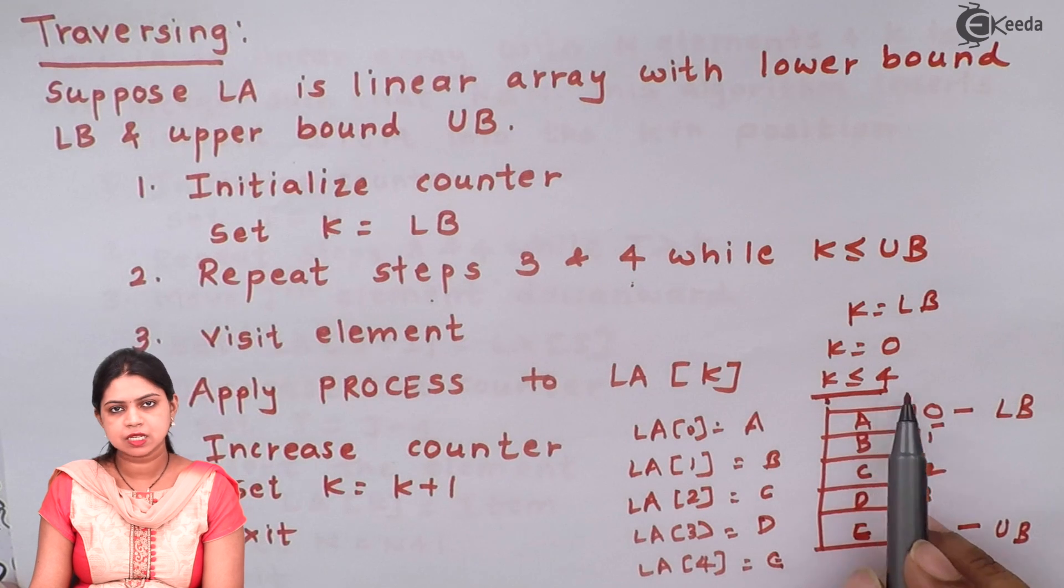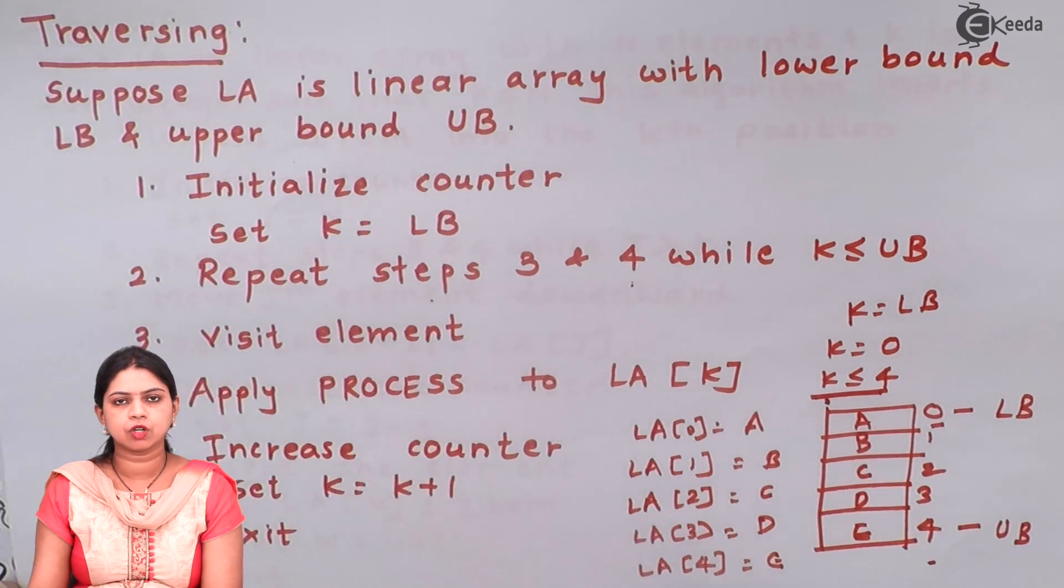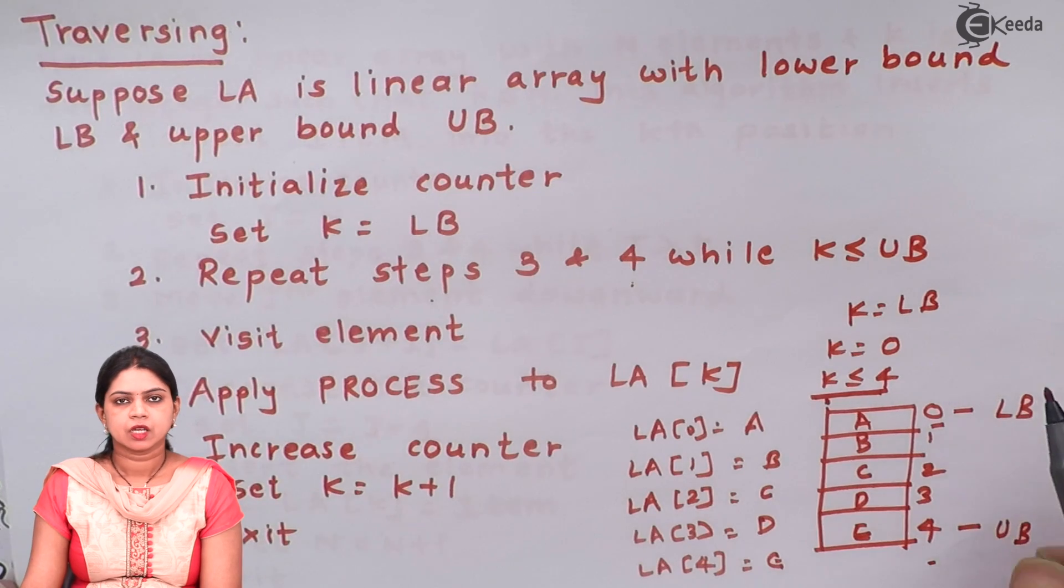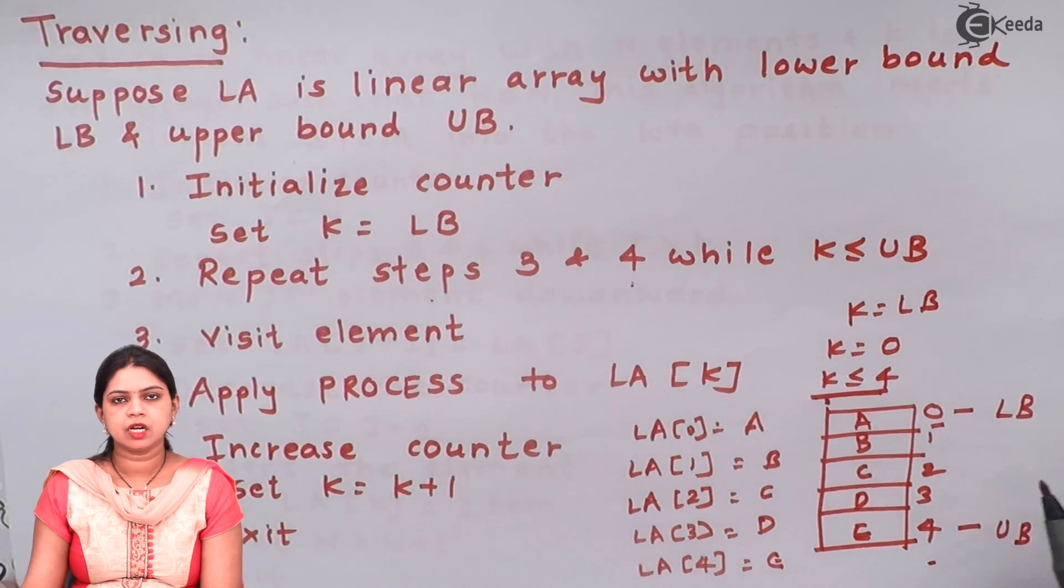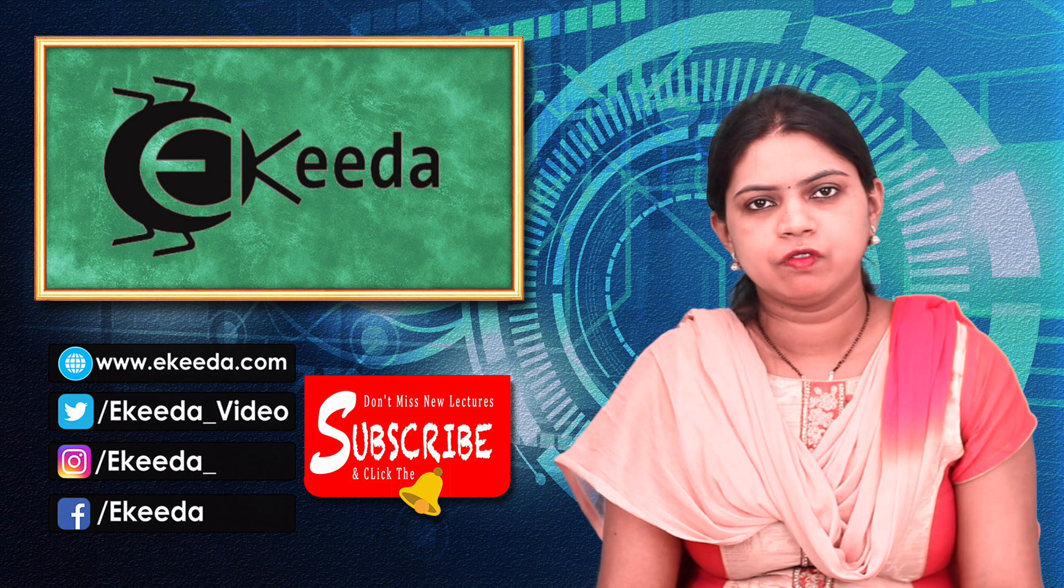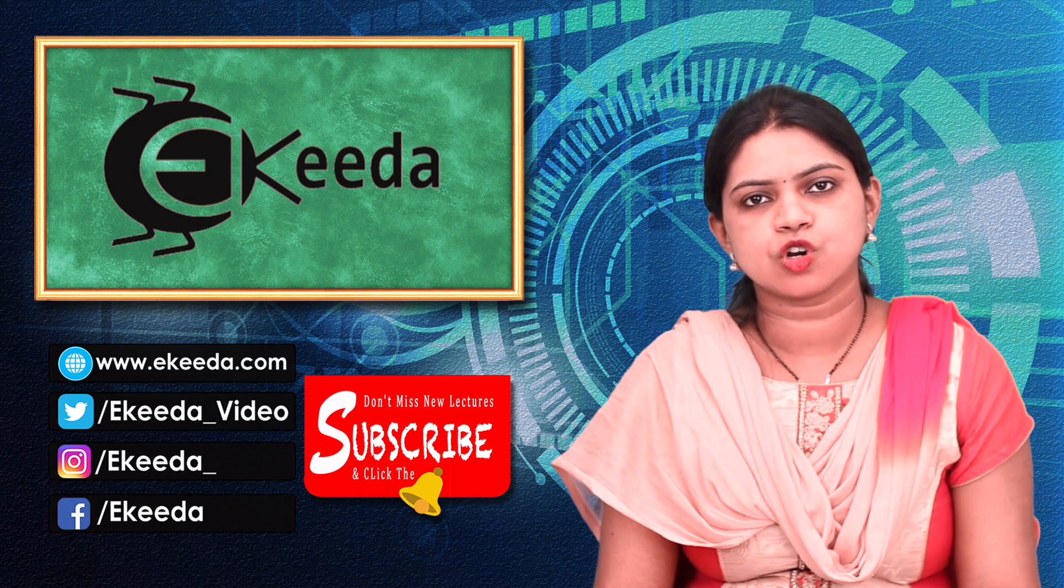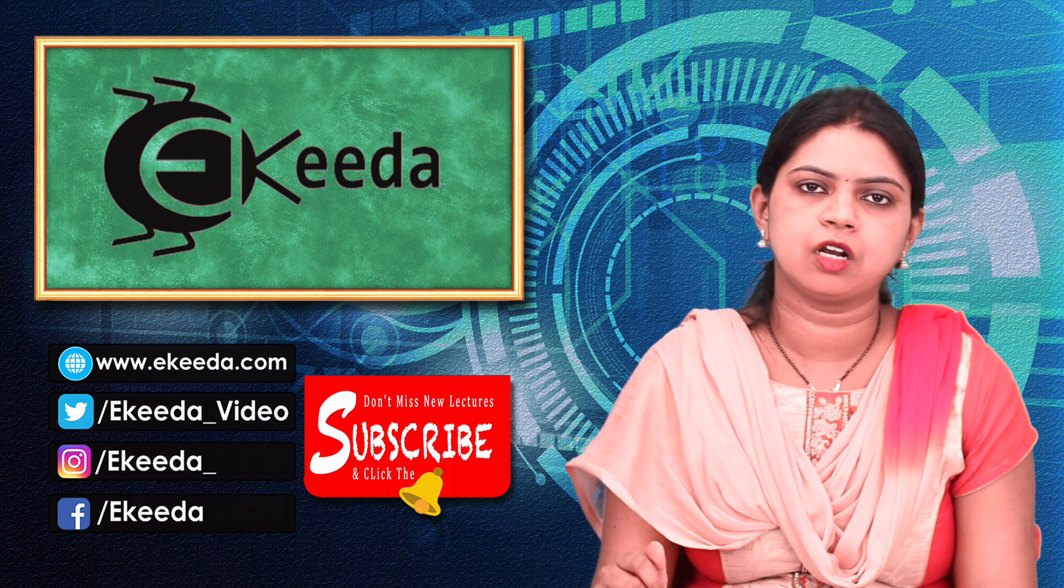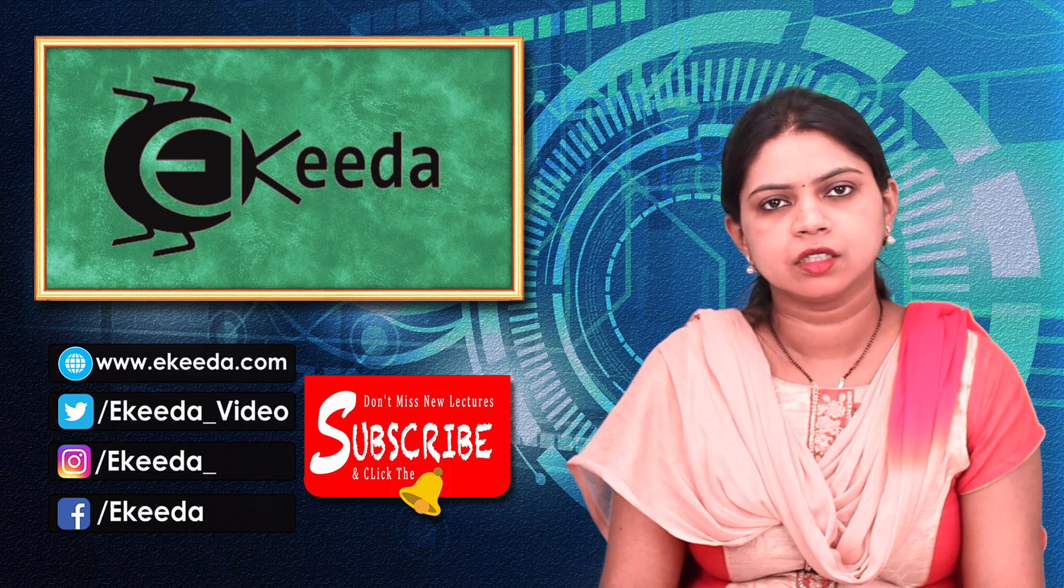So once your k's value is less than equal to 4 you will come out of the loop. This is how we apply process onto the array by using traversing algorithm. Thanks for watching the video. In the next video we will be discussing about the next data structure operations inserting and deleting and we will be discussing the algorithms on inserting and deleting. Thank you.